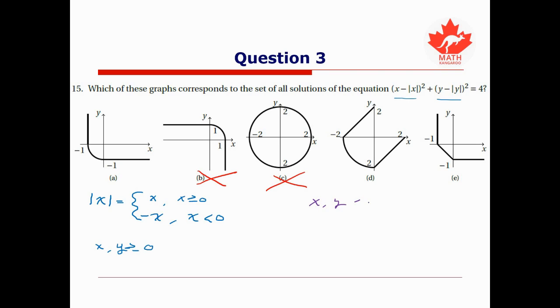Okay, what if x and y were both negative? Well then our equation becomes (x - (-x))² + (y - (-y))² = 4. The negative of a negative is positive, so this becomes (2x)² + (2y)² = 4, which gives us 4x² + 4y² = 4. Finally, dividing both sides by 4, we obtain x² + y² = 1.